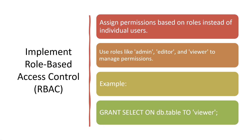Role-based access control, or RBAC, which we've covered earlier, is crucial for managing permissions effectively. Instead of assigning permissions directly to individual users, assign them to roles. Define roles based on the principle of least privilege. For example, an admin role would have full access, while a viewer role would have read-only access. The SQL statement GRANT SELECT ON db.table TO viewer grants read-only access for the viewer role. In a retail system, only admins should modify prices, while cashiers may only view product information.